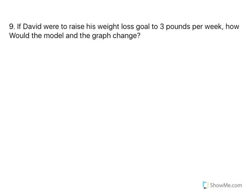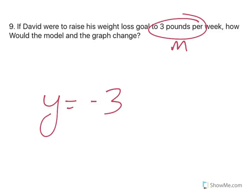Alright. Now, if David were to raise his weight loss goal to 3 pounds a week, how would the model and the graph change? Well, remember, his weight loss plan of how much per week, that's the slope. So, the only thing that changes is that his slope would now be negative 3 instead of negative 2. So, we would still have the same y-intercept, right? He still starts at 240.